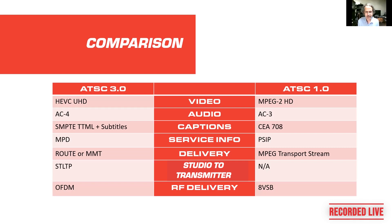Regarding the studio-to-transmitter link, the broadcaster can send this data stream directly to the transmitter — it doesn't have to be modified or changed at the transmitter site. It just gets modulated and broadcast out, which is a bit different from MPEG. The modulation scheme chosen for ATSC 3.0 is OFDM, as opposed to the 8VSB used in the current ATSC 1.0.